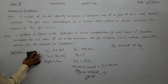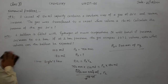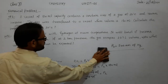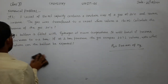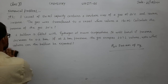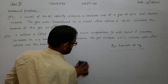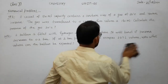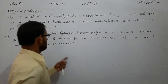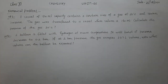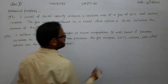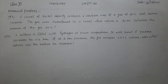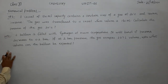In numerical problem 2: a balloon is filled with hydrogen at room temperature. It will burst if the pressure decreases to 0.2 bar. If at one bar pressure the gas occupies 2.27 liter volume, what volume can the balloon be expanded to? Let us see the solution.